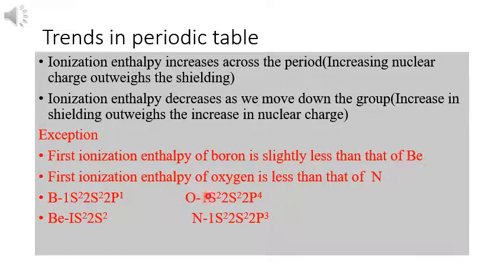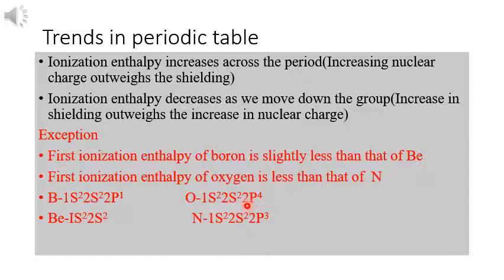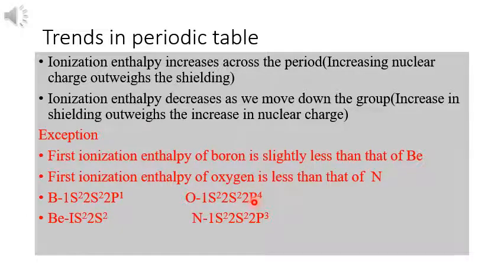In the case of oxygen and nitrogen, the first ionization enthalpy of oxygen is less than that of nitrogen. Oxygen has configuration 1s², 2s², 2p⁴, while nitrogen is 1s², 2s², 2p³. In nitrogen, all three p orbitals (px, py, pz) are half-filled. In oxygen, two are half-filled and one is fully filled, causing electron repulsion in that orbital, so less energy is required to remove an electron from oxygen compared to nitrogen.